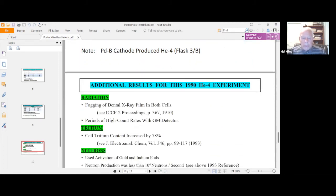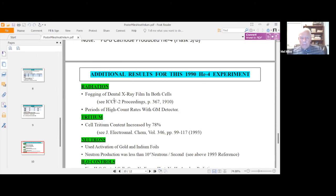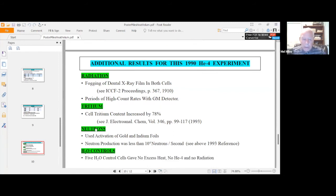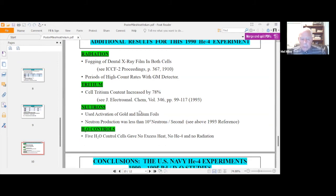Besides the measurement of helium-4, the 1990 experiment, which gave the largest excess heat, had other signs of nuclear reactions. Signs of radiation, there were fogging of dental film and x-ray film in both cells. There were periods of high counts with a Geiger-Müller detector. The tritium content during the whole experiment increased by 78 percent, and so there was apparently some tritium produced.